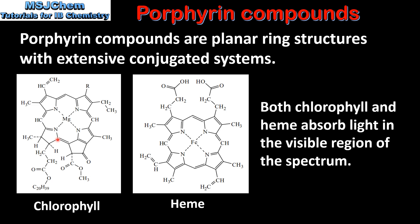As we saw in a previous video, a conjugated system consists of alternating single and double bonds with delocalised pi electrons. Both chlorophyll and heme absorb light in the visible region of the spectrum.